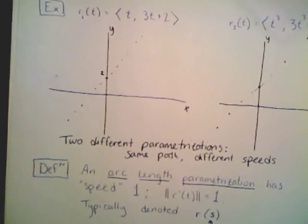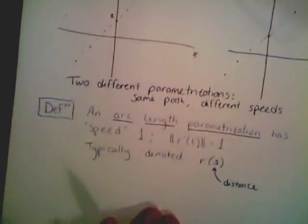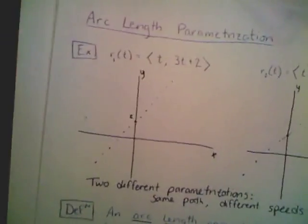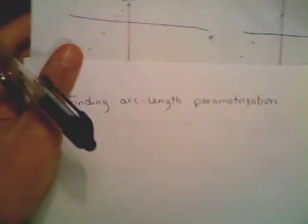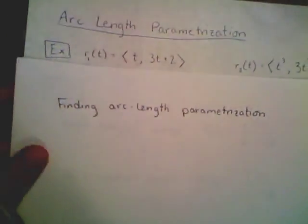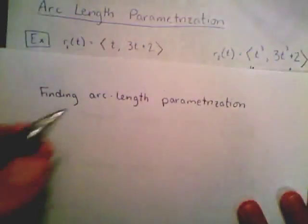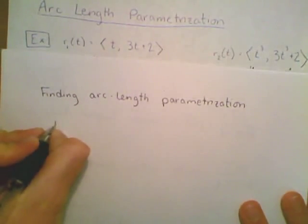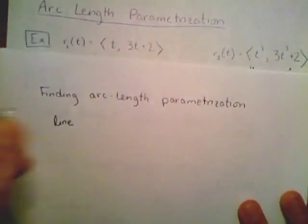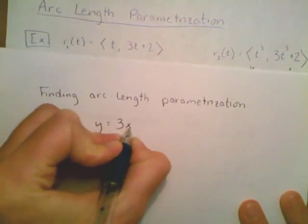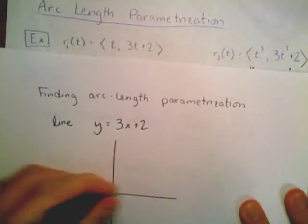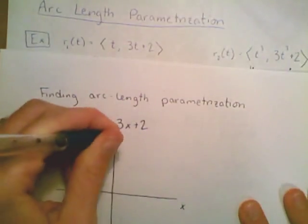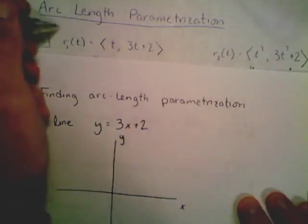For example, let's find an arc length parameterization for the line y equals 3x plus 2. We'll start with r1 of t equals (t, 3t plus 2) and modify it to have speed exactly equal to 1. First, find the speed of r1 of t. The derivative is (1, 3), and its magnitude is the square root of 1 squared plus 3 squared, which equals square root of 10. So this parameterization moves at constant speed but at speed square root of 10.